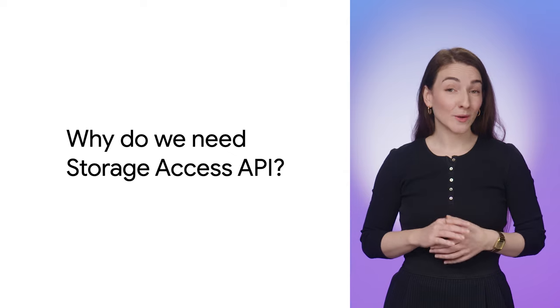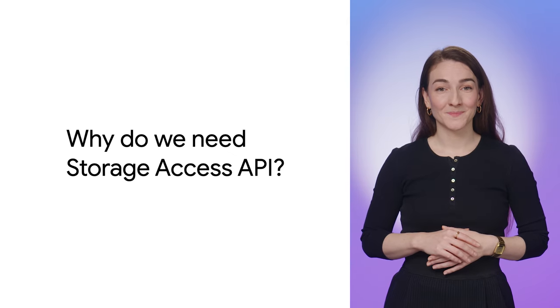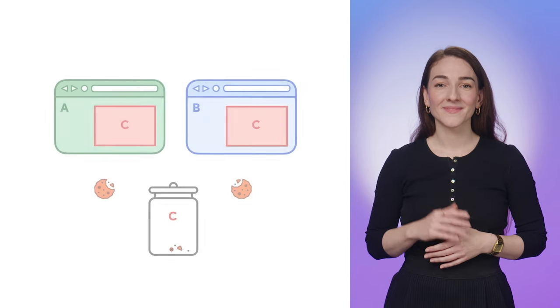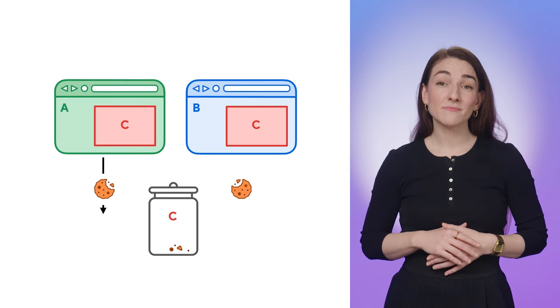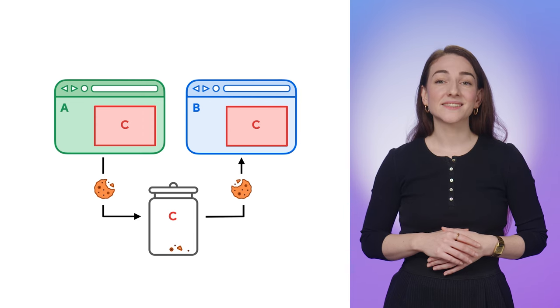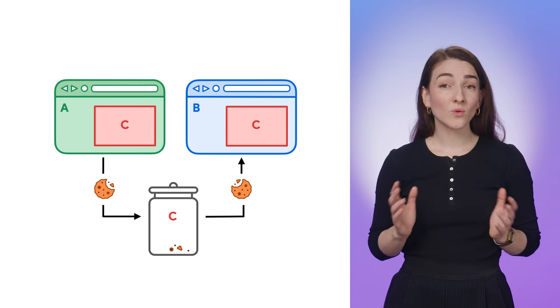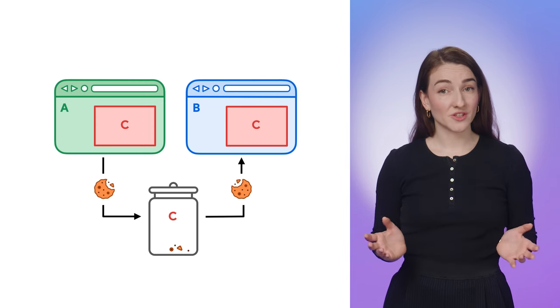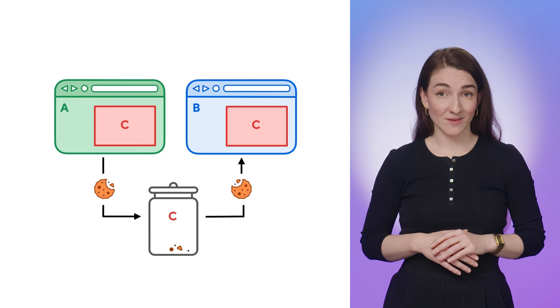Let's first see why we need the Storage Access API. Third-party cookies are the main mechanism that enables cross-site tracking, and several major browsers have already placed restrictions on third-party cookies in some way. Third-party cookies also enable many valid use cases, such as managing state in embedded content or enabling user sessions across multiple sites.